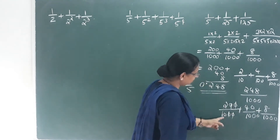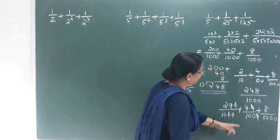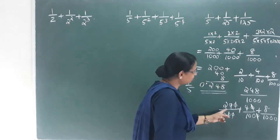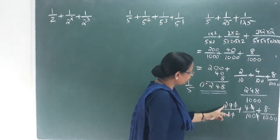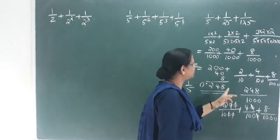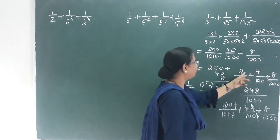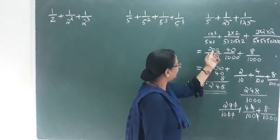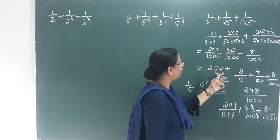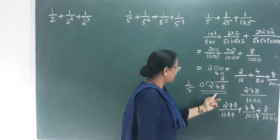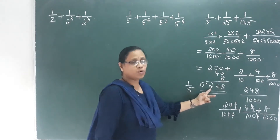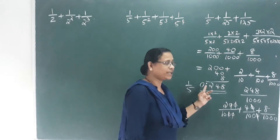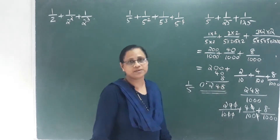We have 2 by 10, 4 by 100. Here is 200, here is 40, here is 8. Now we will add 2, 4, 8. The decimal is 0.248. That means the decimal form is confirmed.